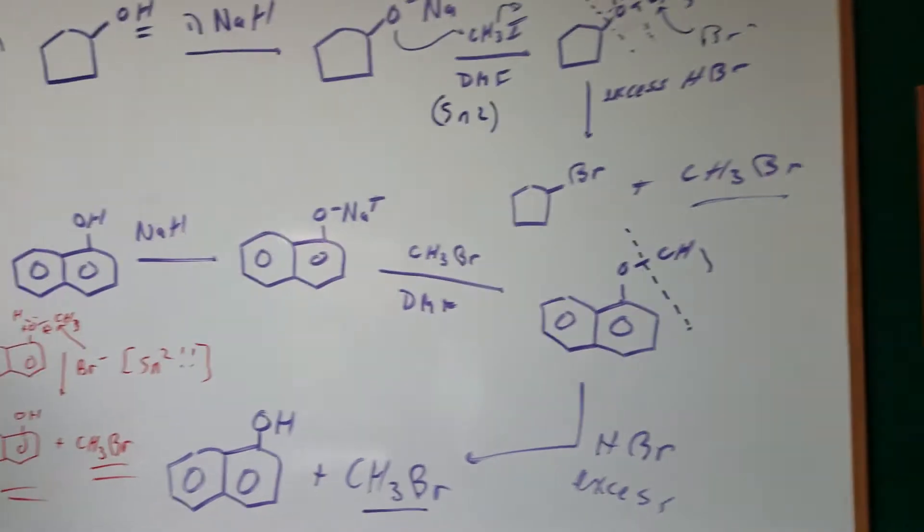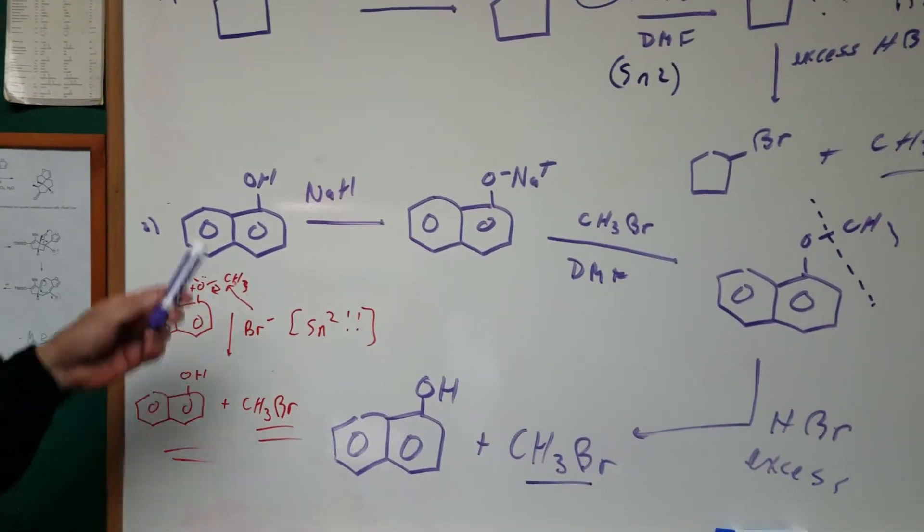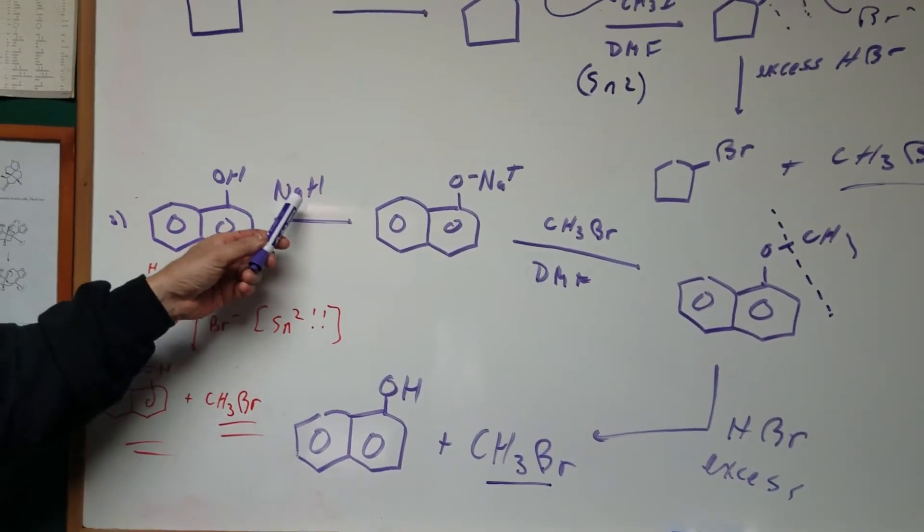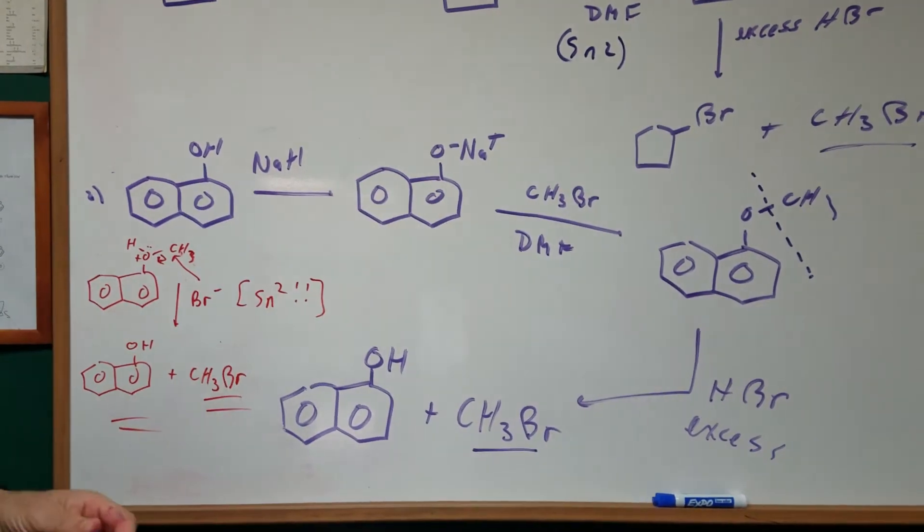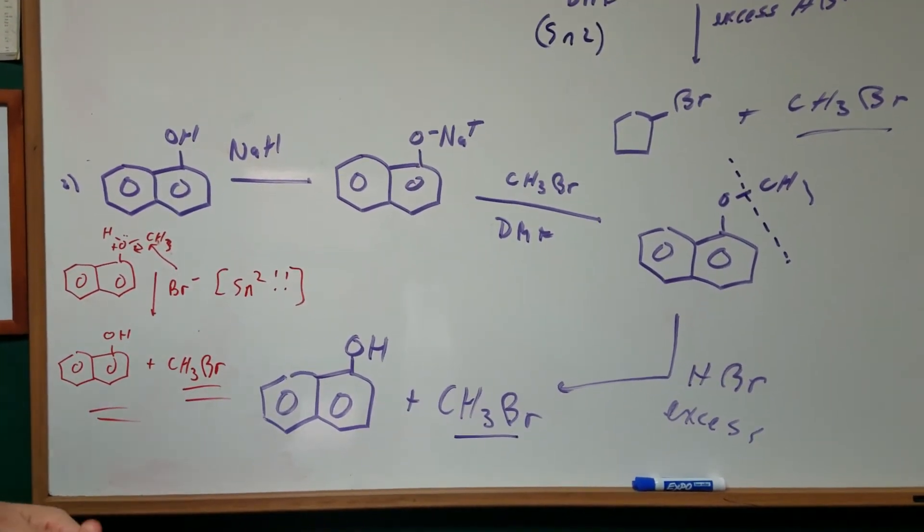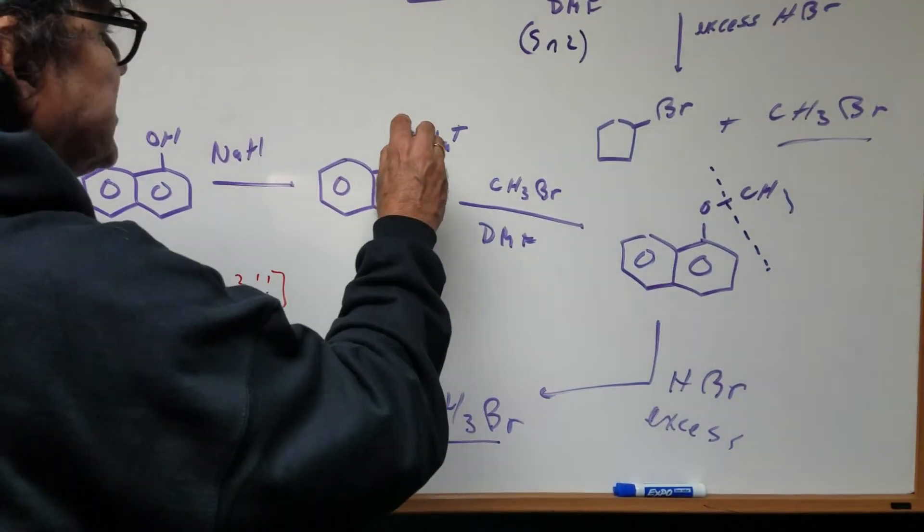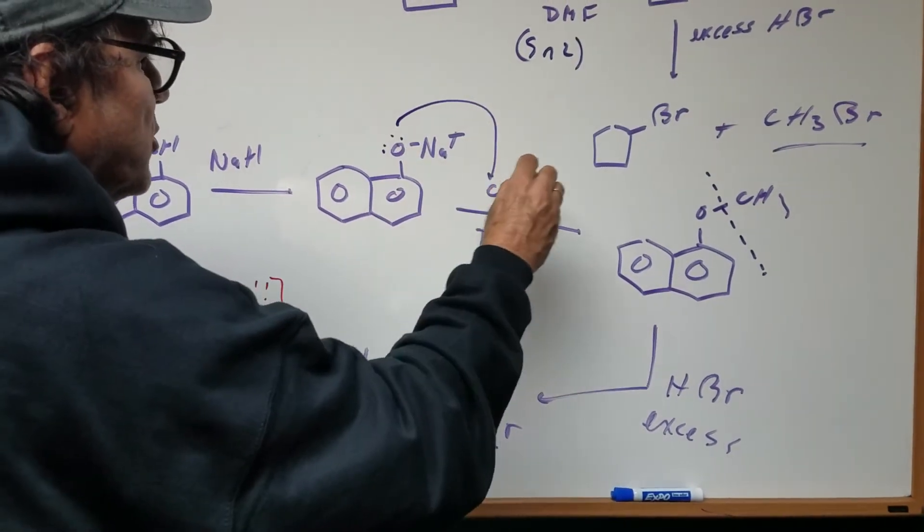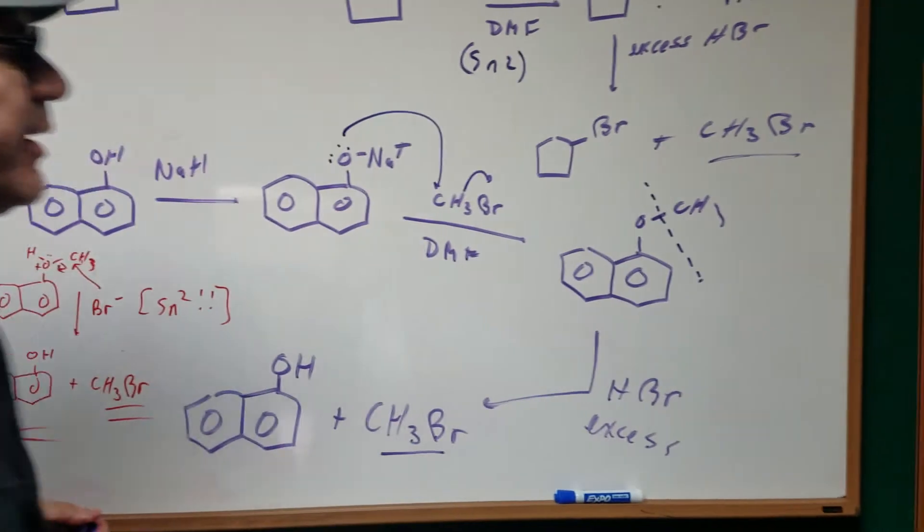Now here's a more complicated example. We have one naphthol. First step is the same. You treat it with NaH and you generate your nucleophile. Then you do your Williamson. The Williamson synthesis is straightforward. We're just going to do a simple SN2 and we get the ether.